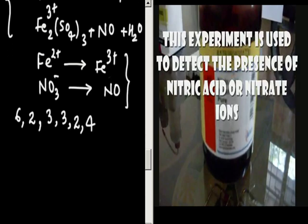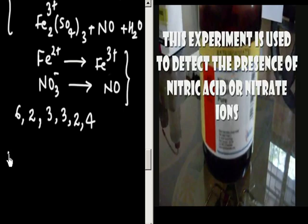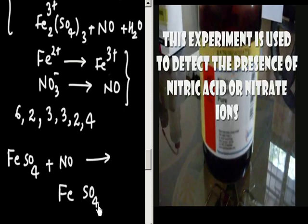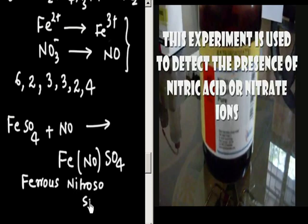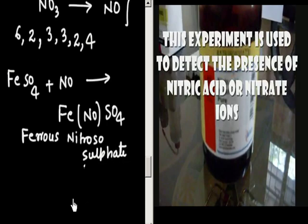Now in the third step, you have NO generated, and there is complex formation. FeSO4 reacts with NO and forms a complex — FeSO4·NO — which is the brown ring. This complex is called ferrous nitrososulphate, and it is brown in color.